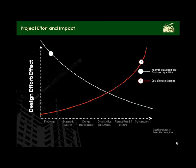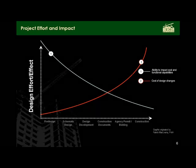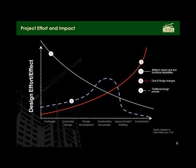The basis of this process is what has been tagged the MacLeamy curve. The idea is that as a project progresses, the ability to impact cost and capabilities drops off and the cost of making changes rises dramatically. The traditional process has most of the work done during the construction documents phase — right where the ability to impact cost and function has dropped way off and costs are starting to go way up.